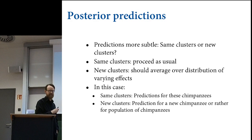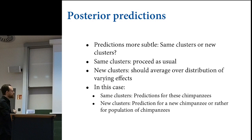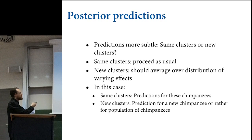When we get to new clusters, there's the question of how we make predictions. The easy thing to say is we should average over the distribution of varying effects. But there are different ways to do that.